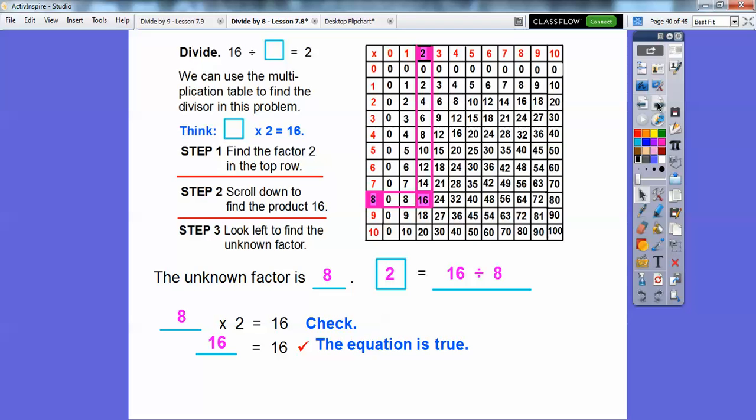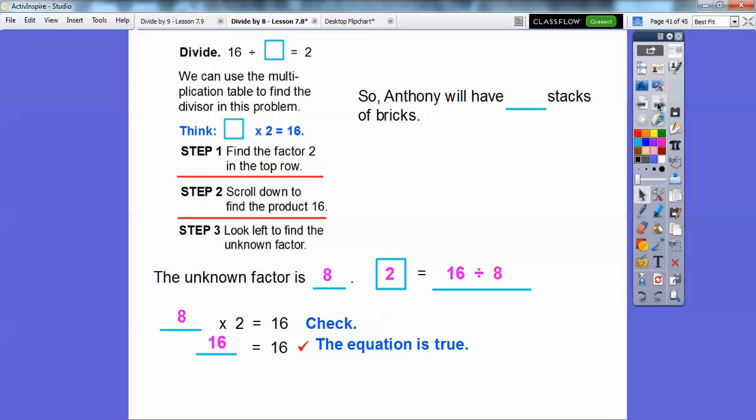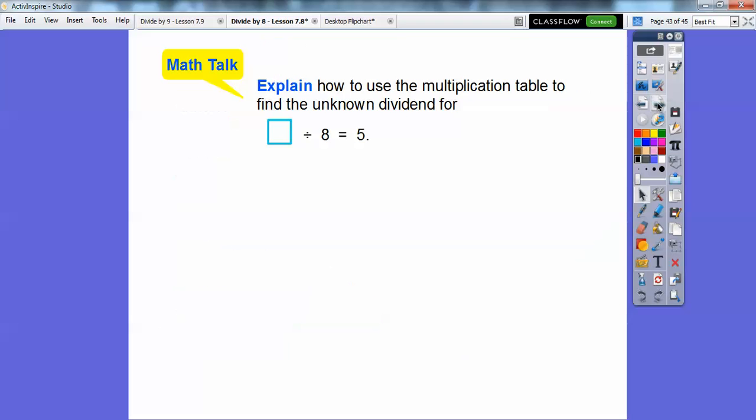So that means 2 equals 16 divided by 8 right there. So 8 times 2 equals 16. So the equation is true right there. So Anthony will have, he's going to have 8 stacks of bricks on that.